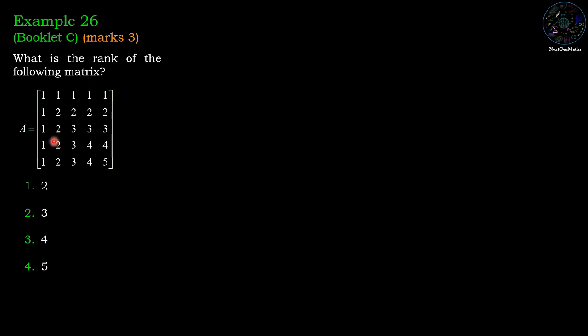We are given a 5 by 5 matrix and the options are: 1st option 2, 2nd option 3, 3rd option 4, 4th option 5.